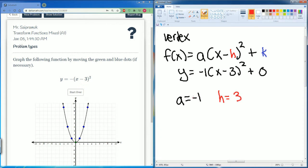So what does this a of negative 1 mean? Well, it means that the size is the same. That's what the 1 means. And then the negative means you flip. The h equals to 3 means you move right. So it moves to the right 3.